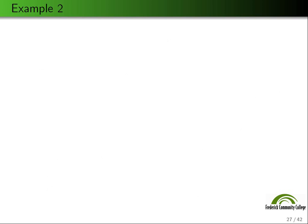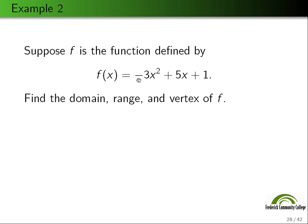Let's do another example. Let's have the function f(x) = -3x² + 5x + 1. We want to do the same thing again. The first thing we want to do is find the vertex because that tells us everything.